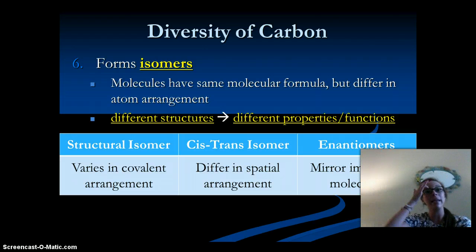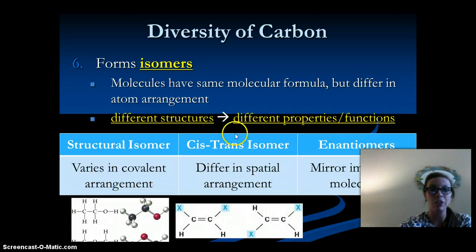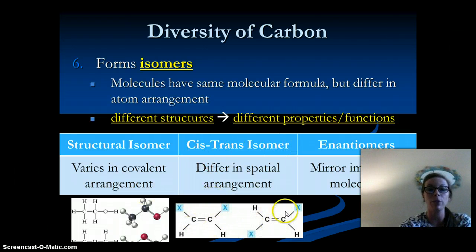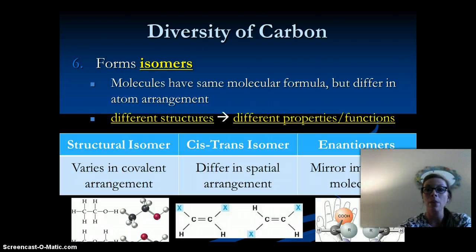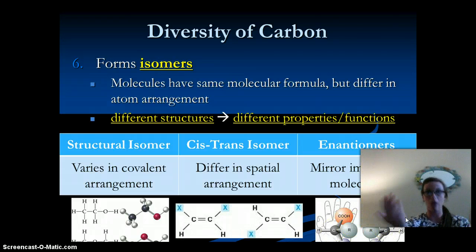We can have structural isomers, which vary in covalent arrangements — so where the bonds are located. We have cis-trans isomers, which differ in spatial arrangement — where atoms are located within the molecule. And then we have enantiomers, which are going to be mirror images of the molecules — they look exactly the same but opposite.